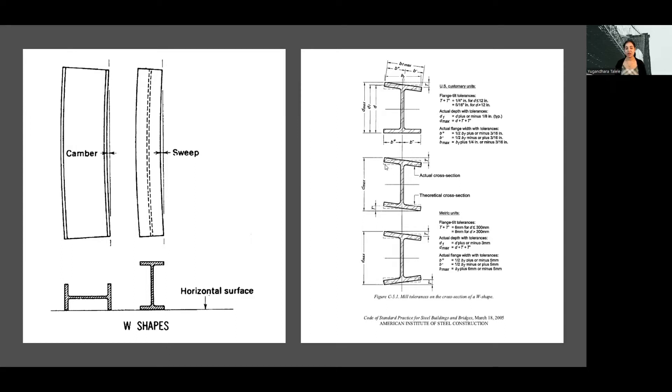The actual shape can differ from the theoretical shape, so there are calculations to take into account mill tolerances. While detailing the connections, you need to know what is bill of lading and bill of sequence — we will see that too. Links for steel production from start to finish and shop fabrication operations are given at the end of this video and in the description box.